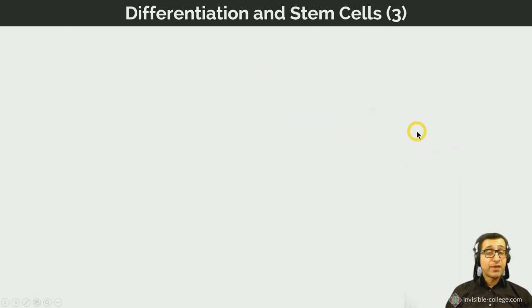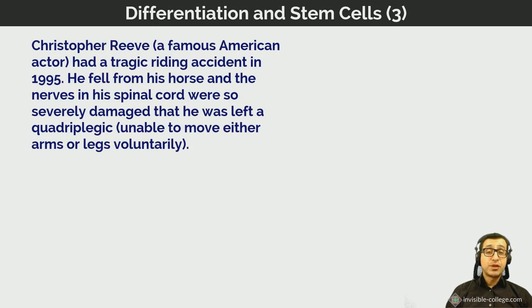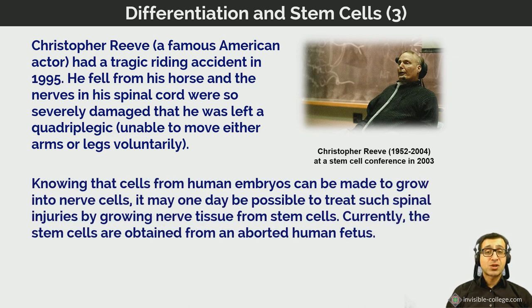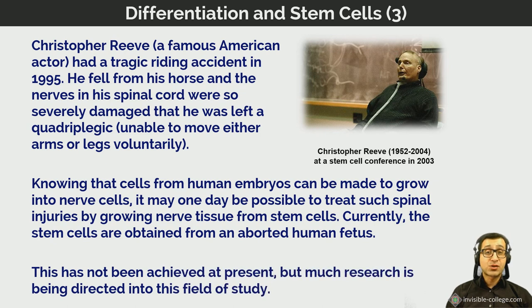Christopher Reeve, the famous American actor who played Superman, had a tragic accident while horse riding in 1995. He fell from his horse and the nerves in his spinal cord were so severely damaged he was left unable to move his arms or legs voluntarily — a condition called quadriplegia. Knowing that cells from human embryos can be made to grow into nerve cells, it may one day be possible to treat spinal injuries by growing nerve cells in the damaged region from embryonic stem cells.